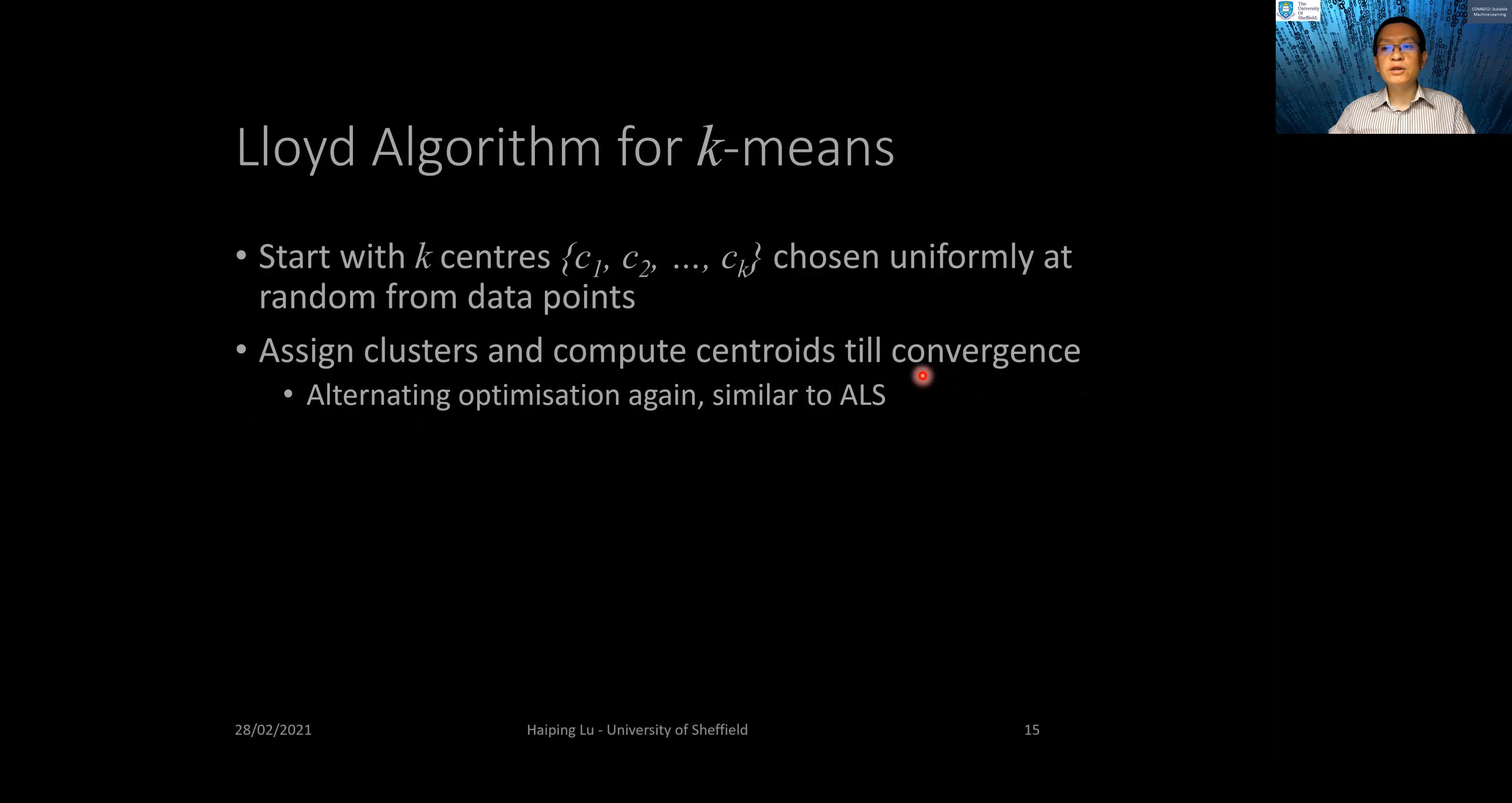Convergence is determined by a tolerance. Basically, if the centroid is not moving by a very small number specified, for example, 10 to the power minus 6 or minus 12, then we consider it converged.